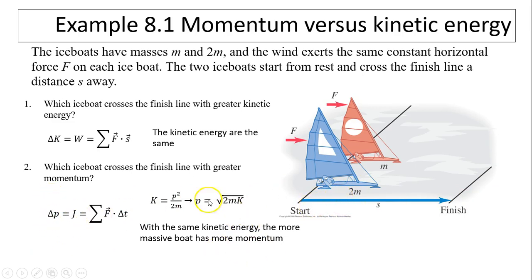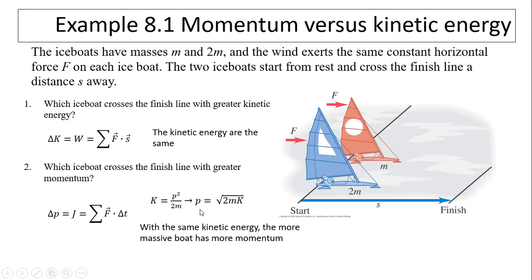Here is another way to look at it: kinetic energy equals p² over 2m, so p equals the square root of 2mK. Since K is the same for both boats, the bigger mass will have a bigger momentum. With the same kinetic energy, the more massive boat has more momentum.